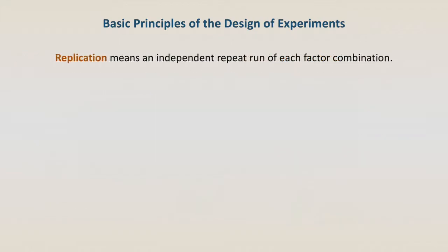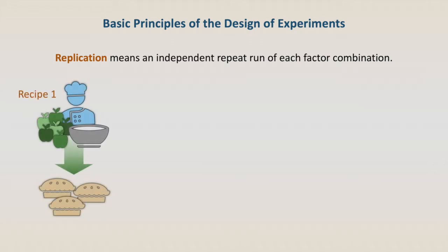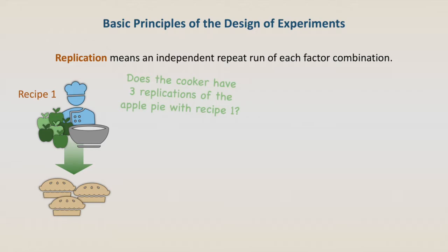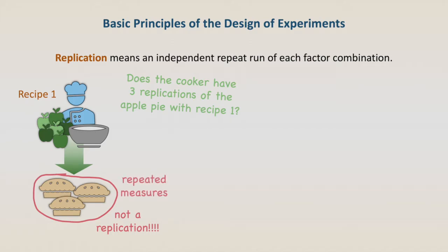Replication means an independent repeat run of each factor combination. If the cooker from the previous example gets some apples and uses them to make a batch of 3 pies using recipe 1, does the cooker have 3 replications of the apple pie with recipe 1? No — these 3 pies are not replications; they are repeated measures.